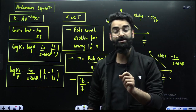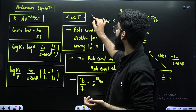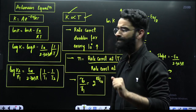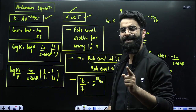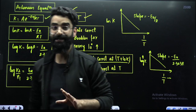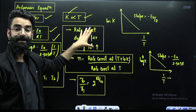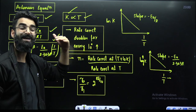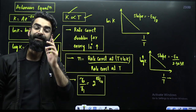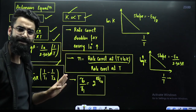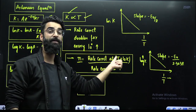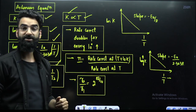The last topic is the Arrhenius equation, which tells you that on increasing the temperature, the rate constant increases and eventually the rate increases. The first form of the Arrhenius equation is: K equals A times e raised to minus E_A divided by RT. There are four forms in total, all of which you need to remember, as questions are directly asked from these equations. It has been observed that the rate constant of a reaction doubles or becomes even more upon increasing temperature by 10 degrees.